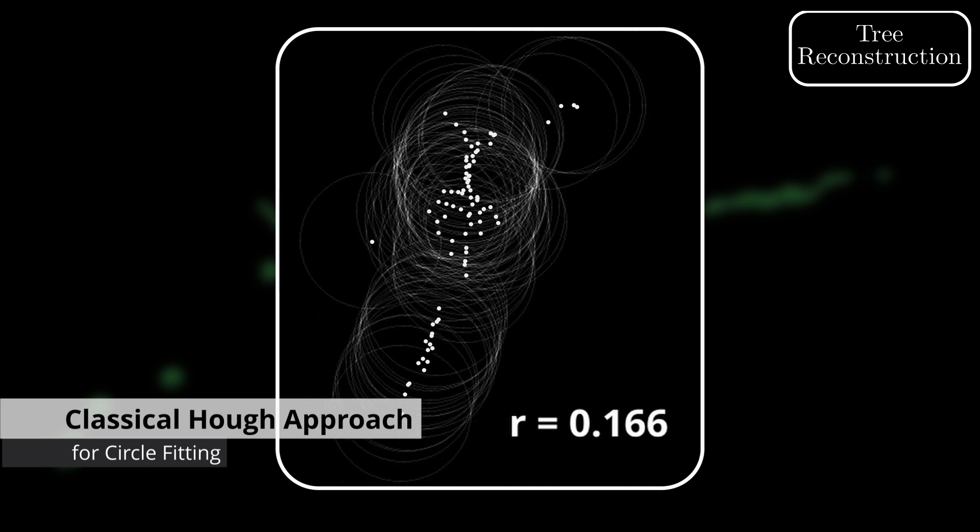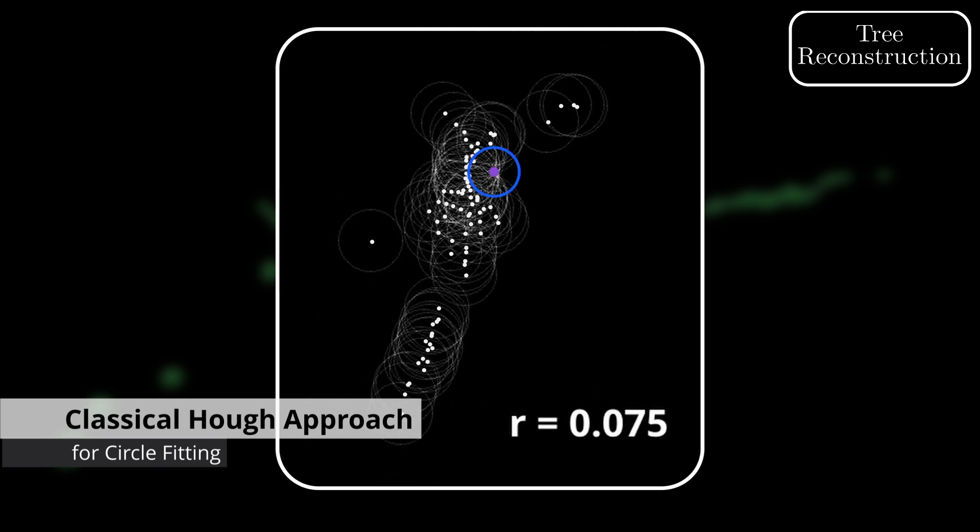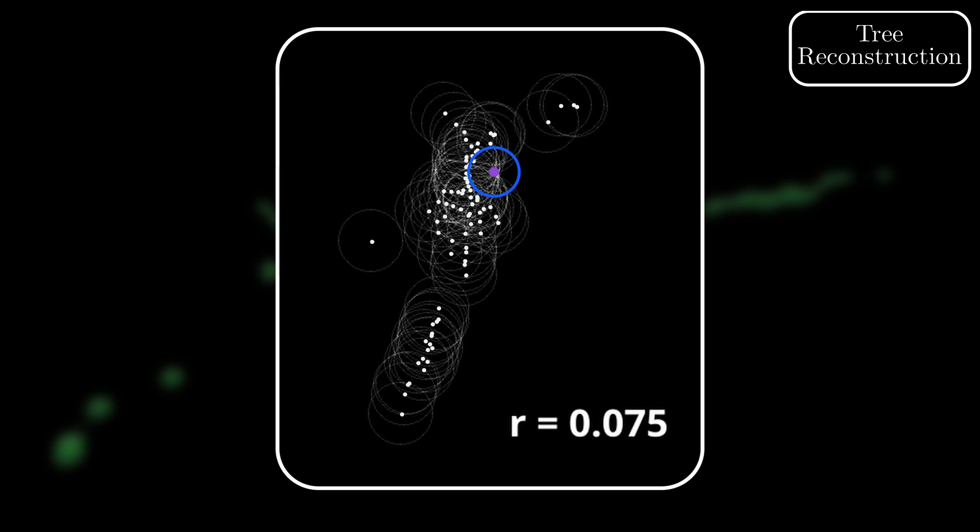The classical Hough transform uses a rasterized input point cloud and Hough space to accumulate votes. Then, the best circle fit is found at the voxel in the Hough space with the most votes. However, we found this method not to be robust in the presence of the noise we are dealing with.